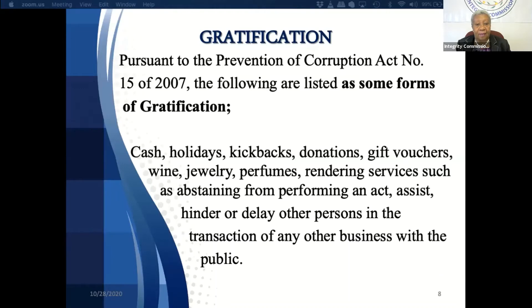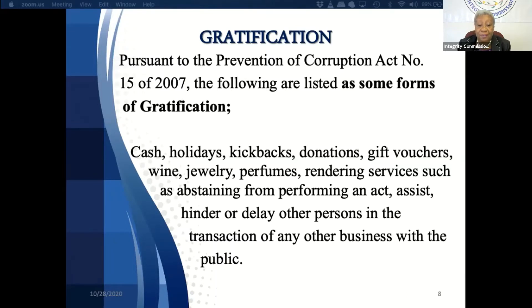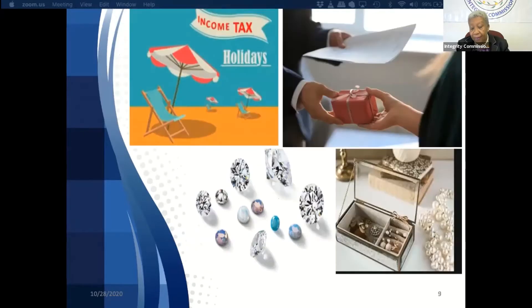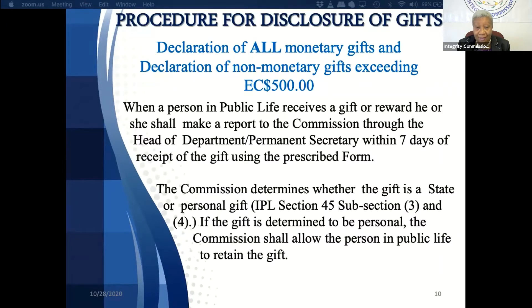Gratification. Under the Prevention of Corruption Act number 15 of 2007, the following are listed as some forms of gratification: cash, holidays, kickbacks, donations, gift vouchers, wine, jewelry, perfumes, rendering services such as abstaining from performing an act, assisting, hindering, or delaying other persons in the transaction of any business with the public. In summary, gratification includes holidays, little gifts, and so on.